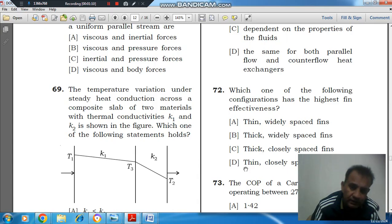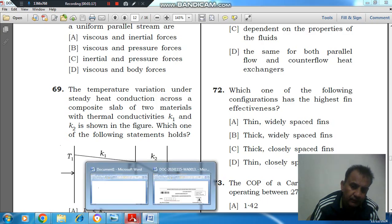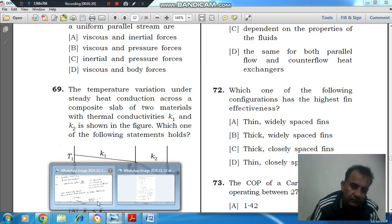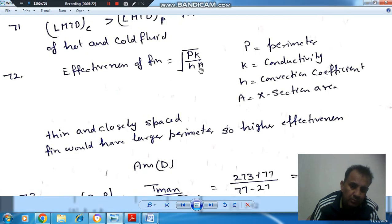If we use thin fins, then the cross-section area will also be small. That should be small to have higher effectiveness because in the formula A is at the denominator.